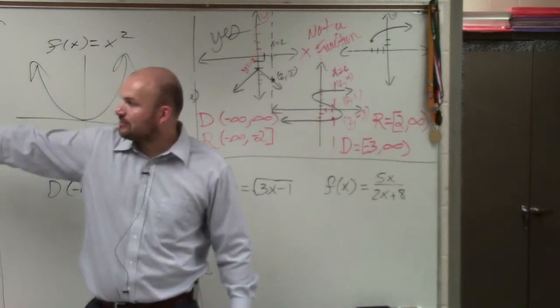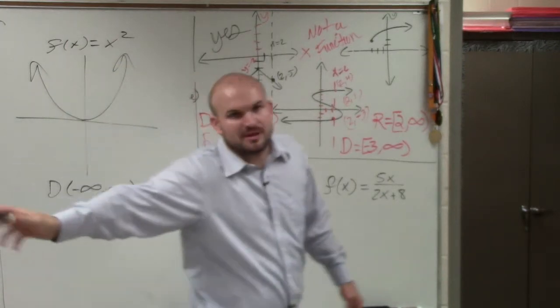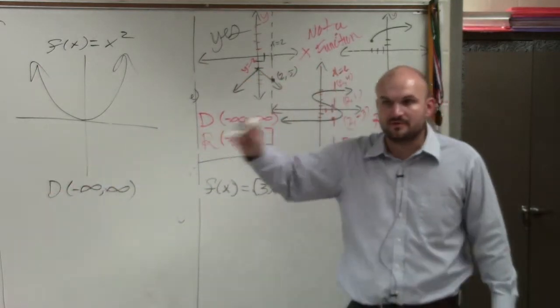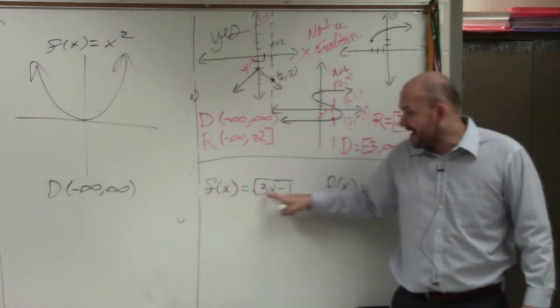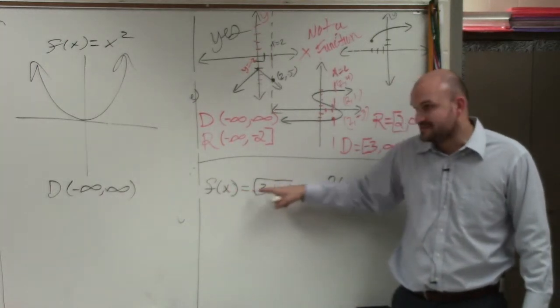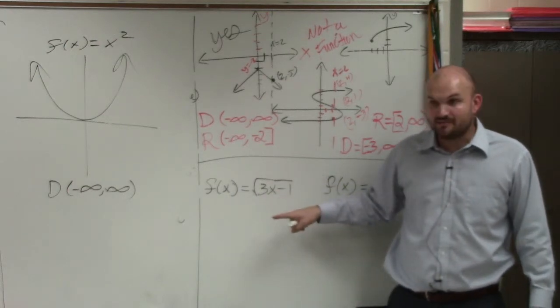So I'm going to revert back to what we did over here when we evaluated. What was the only type of number that we could not take the square root of? So would you guys agree with me that whatever is in my radicand makes it negative is not going to be a part of my domain?